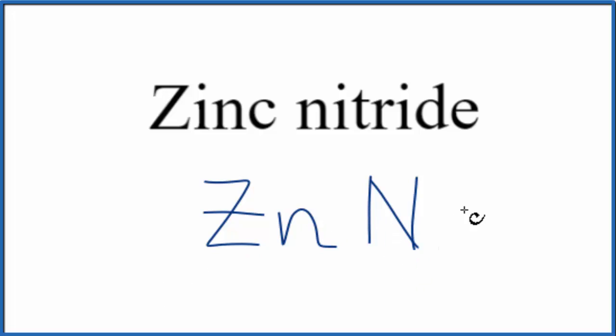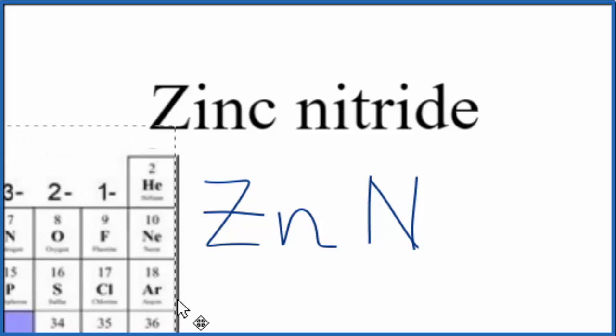So we have the symbols. Now we need to find the charge on each element. This is an ionic compound because we have a metal and a non-metal. So we need to take into account ionic charge. Let's look at the periodic table here.